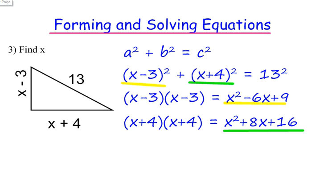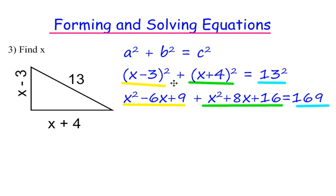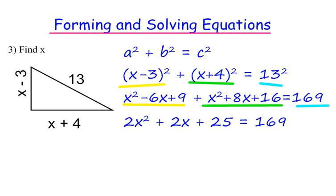Let's make the whole thing expand then. So we have our x squared minus 6x plus 9 here, x squared plus 8x plus 16 here, and then 13 squared is 169. Let's collect all that together. So 2x squared, and then I have minus 6x plus 8x gives me plus 2x, and then 9 plus 16 is 25, and that equals 169.